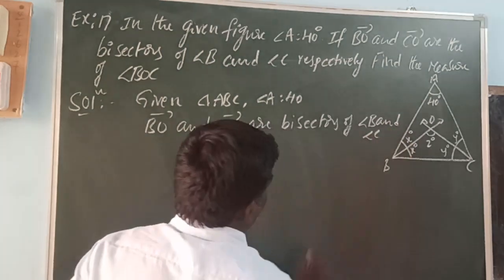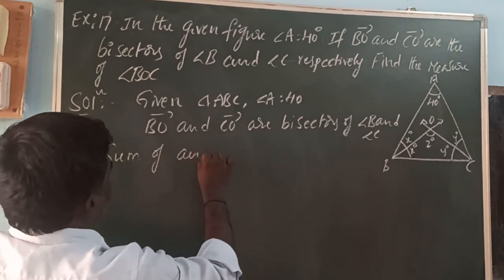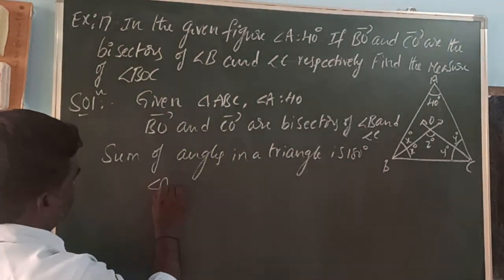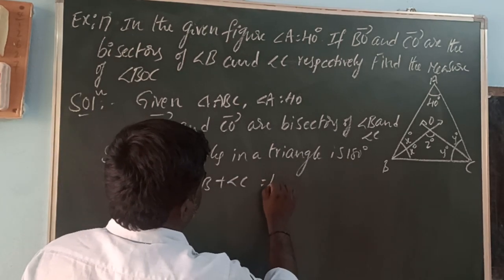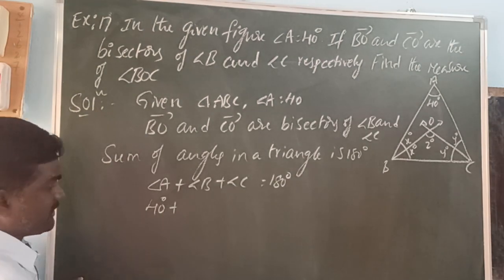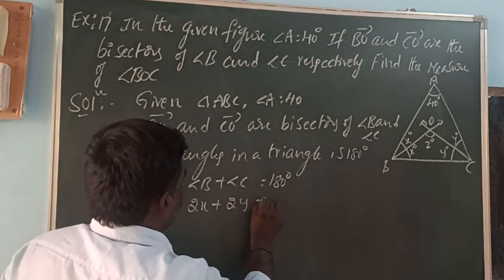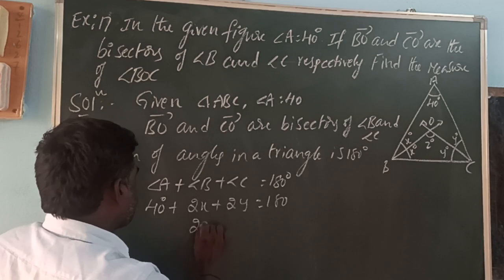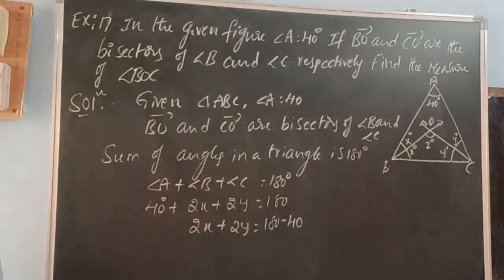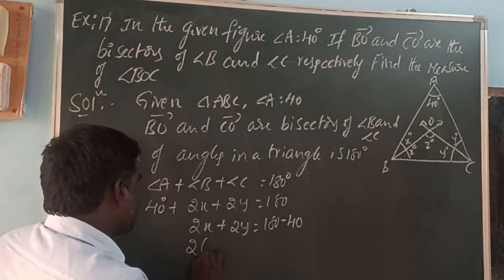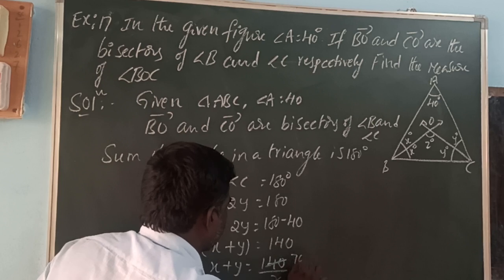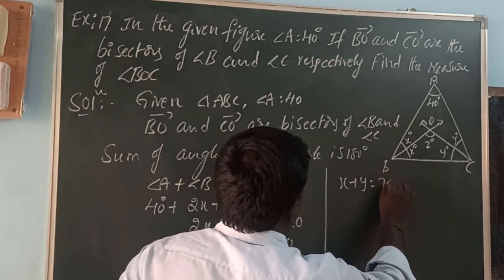In triangle ABC, sum of angles is 180 degrees. Angle A plus angle B plus angle C equals 180 degrees. Angle A is 40 degrees, angle B is 2X, and angle C is 2Y. So 40 plus 2X plus 2Y equals 180. Therefore 2X plus 2Y equals 140. Taking 2 as common, X plus Y equals 70 degrees.